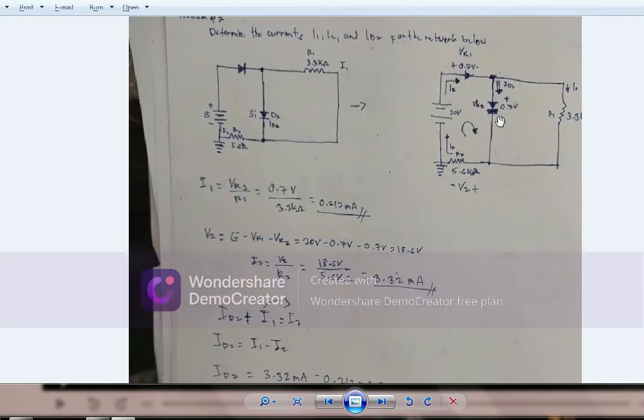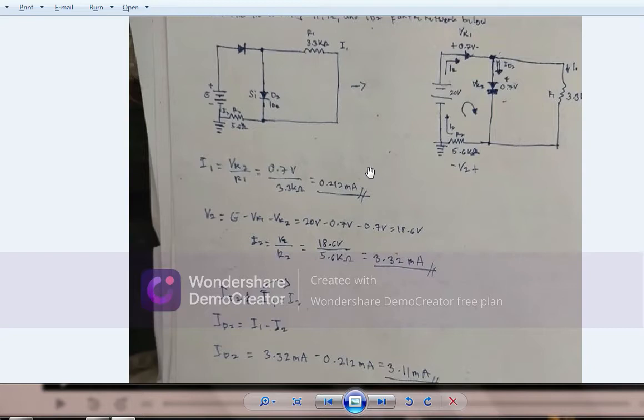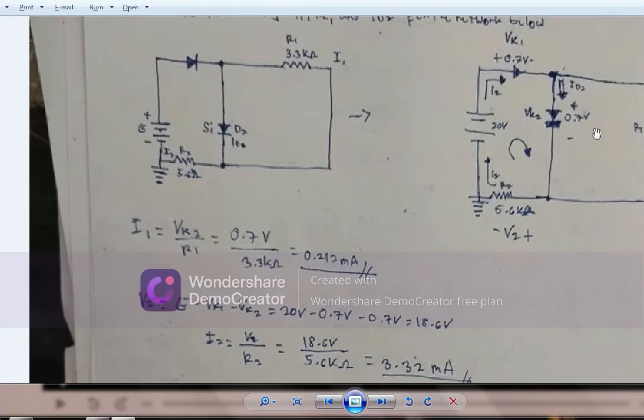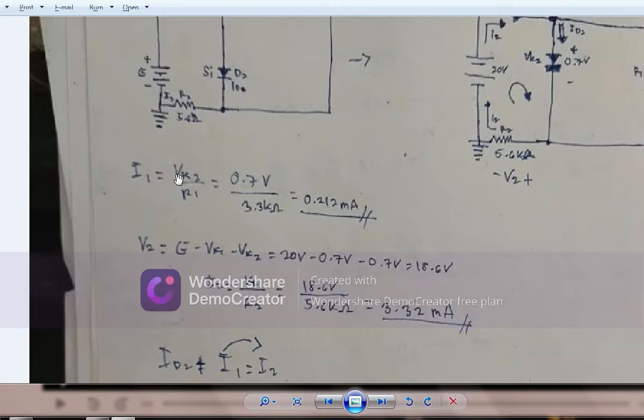The second step is we need to identify how much is i1. Since the voltage across the diode is 0.7 volts, the formula of i1 equals Vk2, which is the potential of the diode, over resistor 1. So i1 equals 0.7 volts over 3.3 kilo ohms.